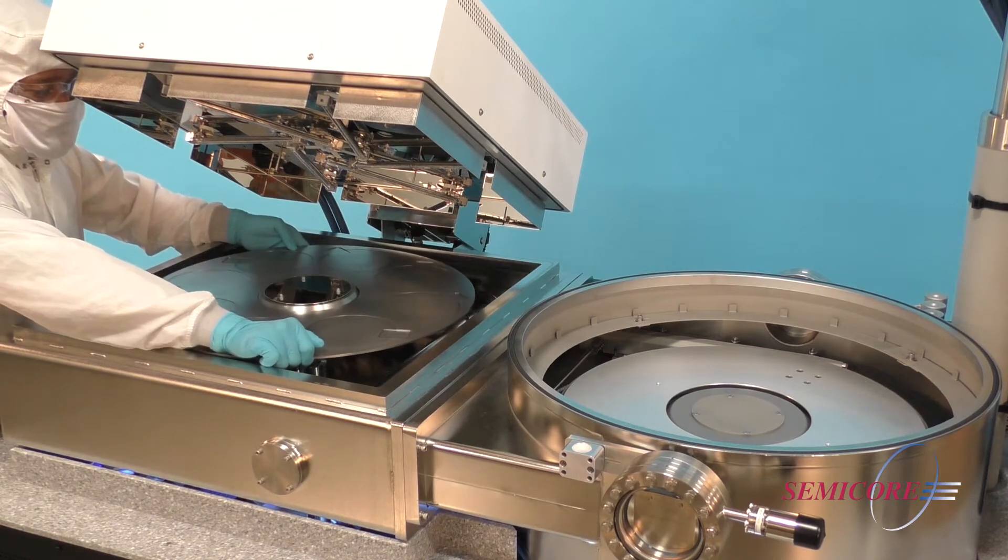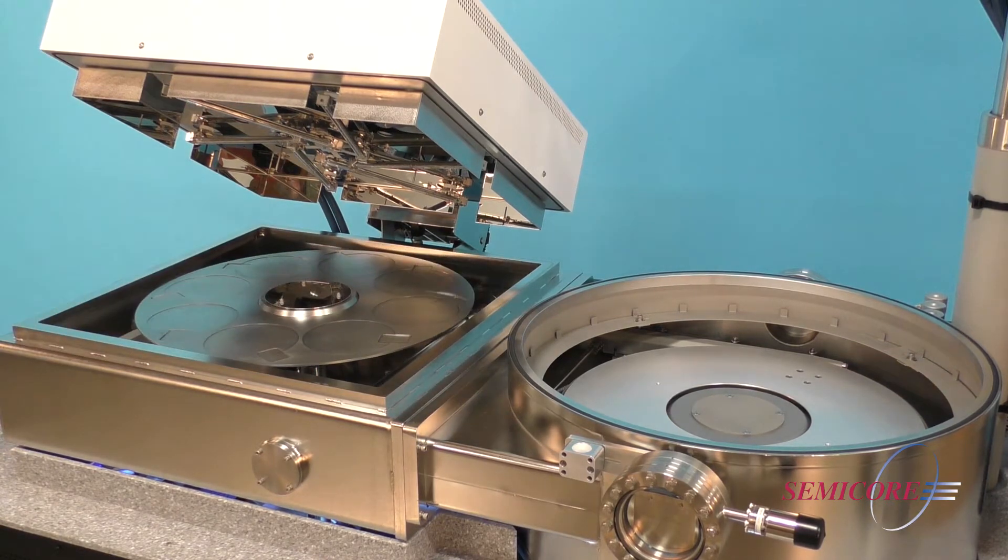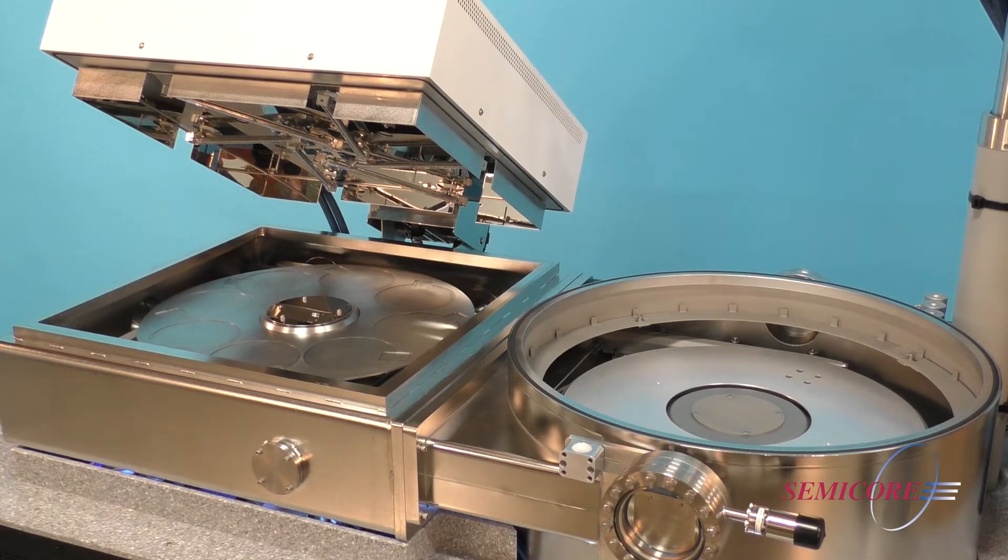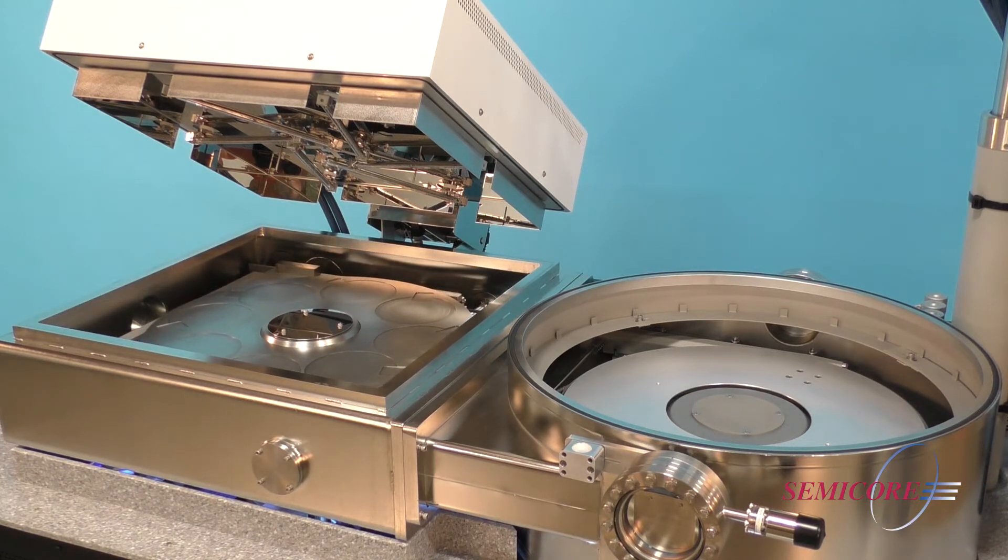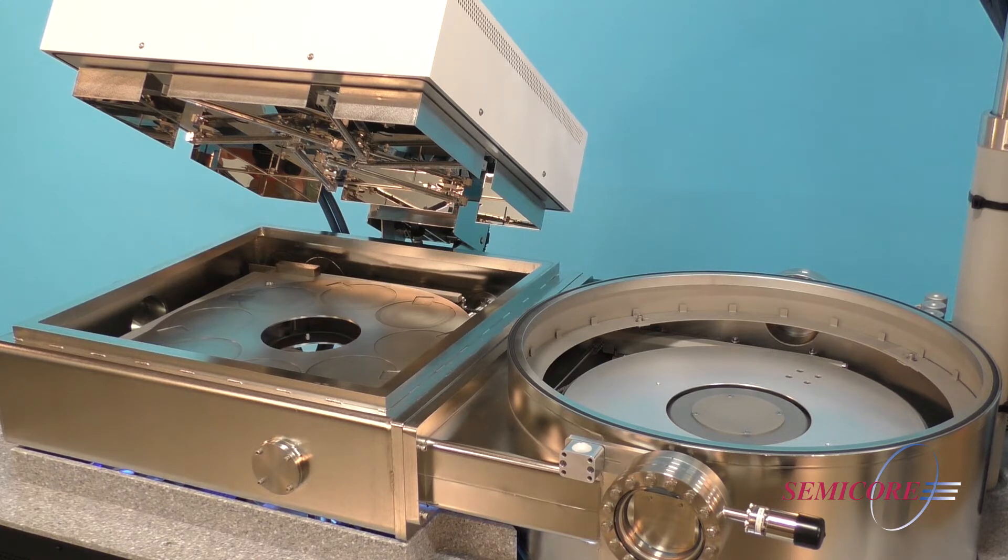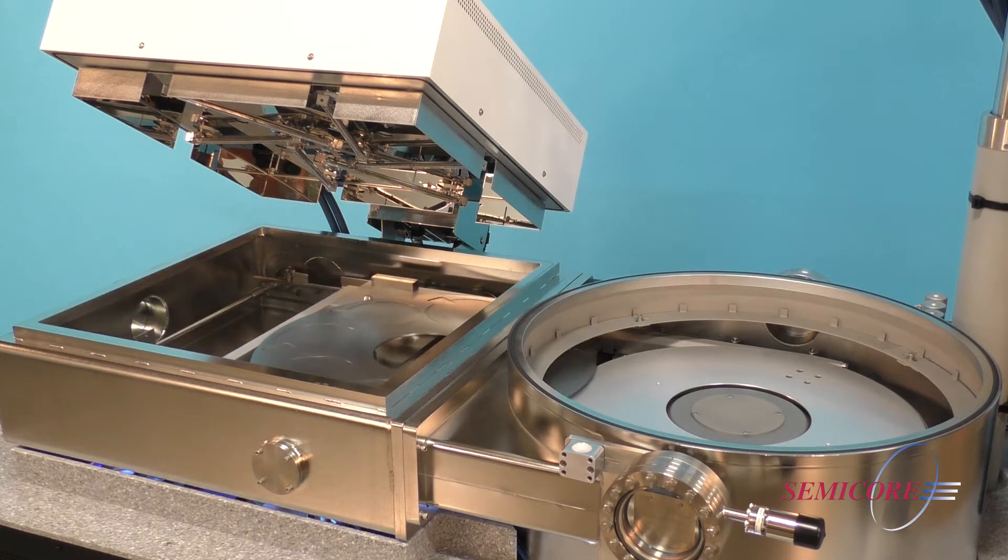The pallet containing the substrates is loaded with the elevator in the up position. The elevator then lowers, and the carrier moves the pallet into the process chamber.